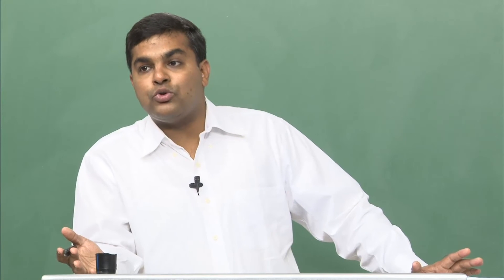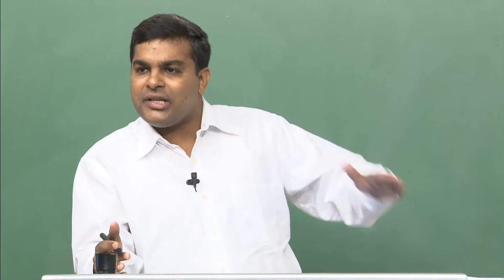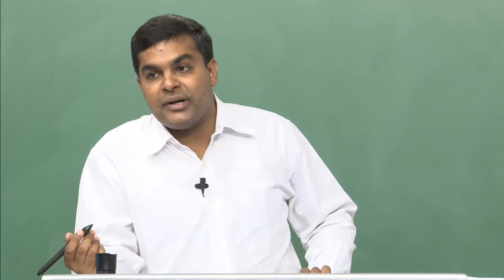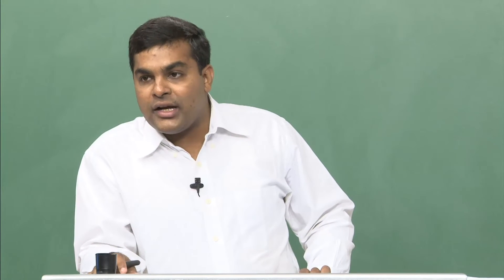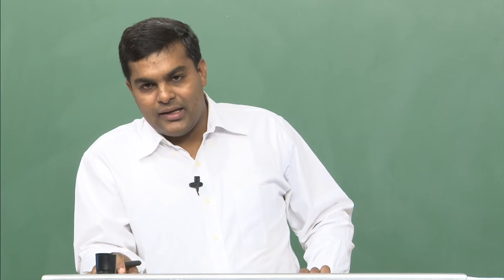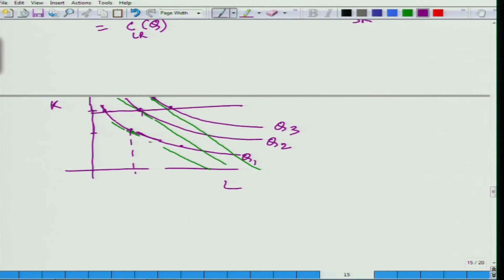Let us say you feel you would do worse by varying K in the long run — what will you do? You will keep K fixed, same as the short run, so you get the same minimum cost. But you may be able to do better by changing K, reducing cost further. Why do I say 'equal to'? Because consider this scenario: we have fixed K equal to K-bar, and at the optimal level it turns out that K-star — the K required in the long run — is the same as K-bar. In this case, you cannot do better, so the cost is the same in the long run as in the short run.